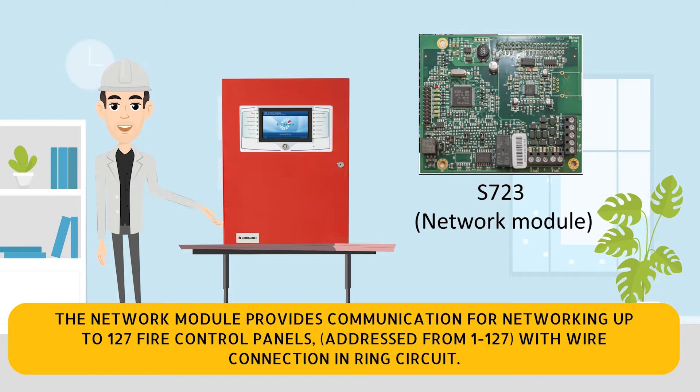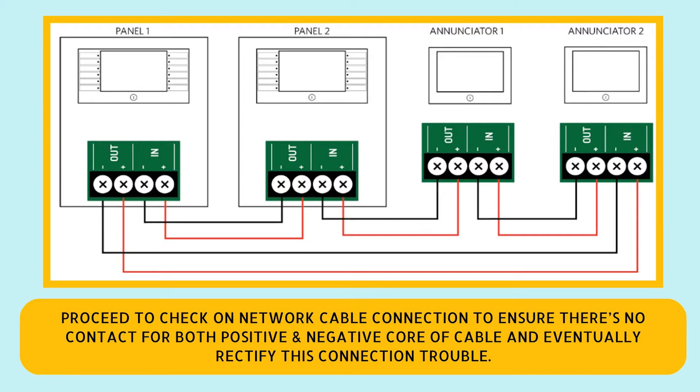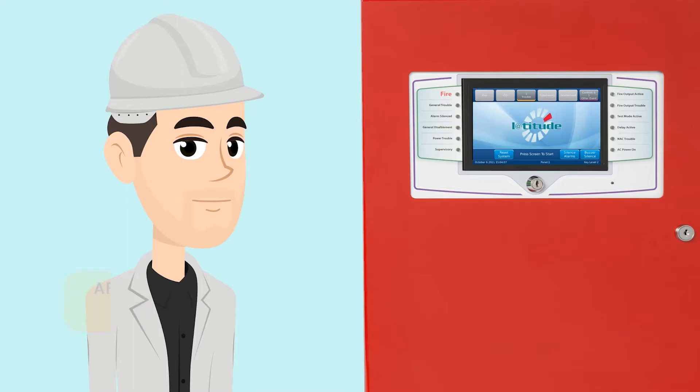The panels are addressed from 1 to 127 with wire connection in a ring circuit. The network module is constantly monitoring the incoming and outgoing circuit. A network short circuit trouble indicates there is a connection trouble — the positive and negative core of the network cable came in contact. Proceed to check the network cable connection to ensure there is no contact between both the positive and negative core of the cable.